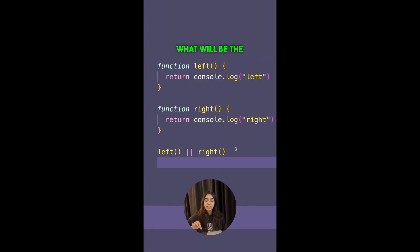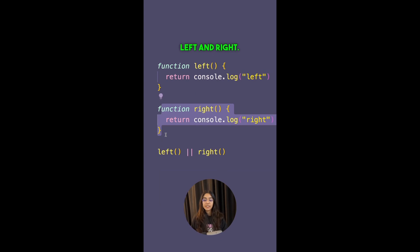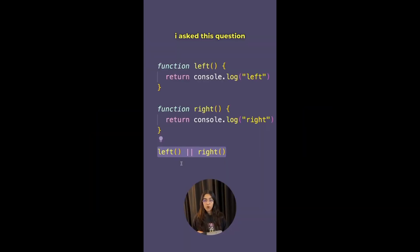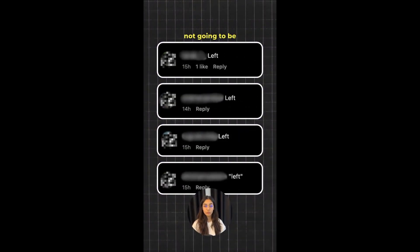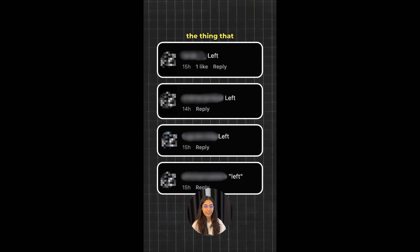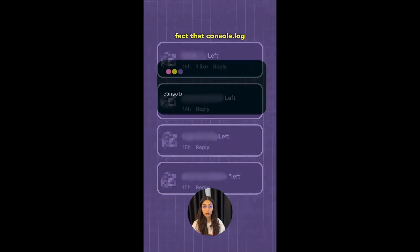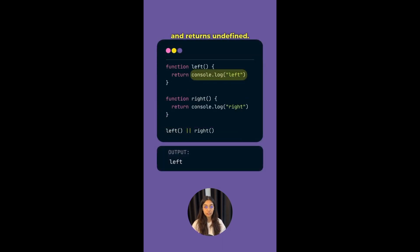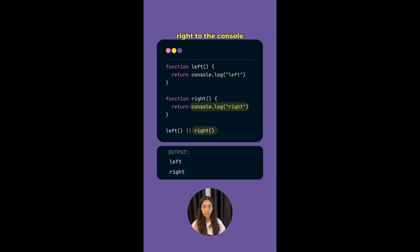What will be the output of this code? I have two functions: left returns console.log('left') and right returns console.log('right'). I've executed them as left || right. Most of you got this wrong — the output is both 'left' and 'right'. The key detail missed is that console.log returns undefined. When you call left(), it prints 'left' and returns undefined, which is falsy. Since the left side of || is falsy, the right function is also executed, printing 'right' and returning undefined.